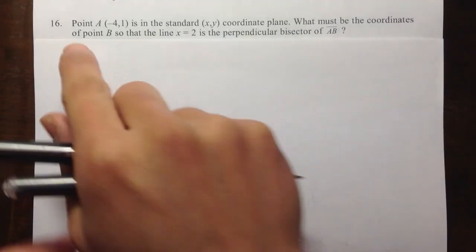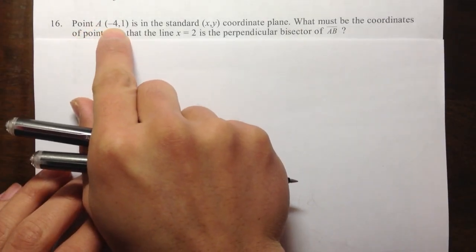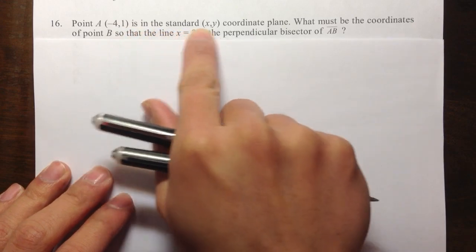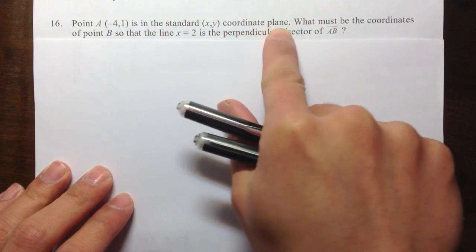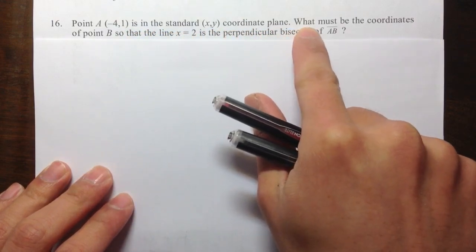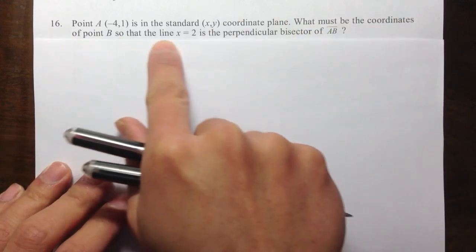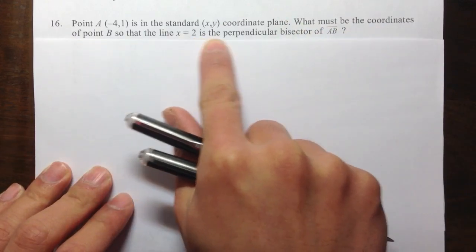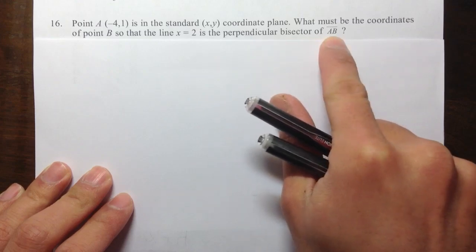Let's do 16. Point A, negative 4 comma 1, is in the standard x, y coordinate plane. And it says, what must be the coordinate of point B so that the line x equals 2 is the perpendicular bisector of segment AB.